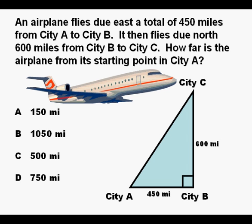Let's look at a problem. An airplane flies due east a total of 450 miles from city A to city B. It then flies due north 600 miles from city B to city C. How far is the airplane from its starting point in city A?